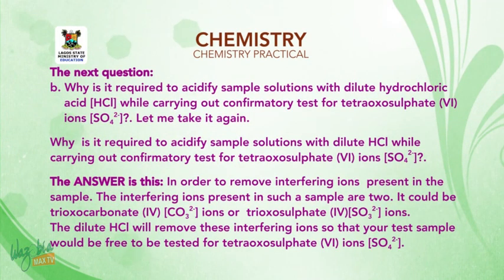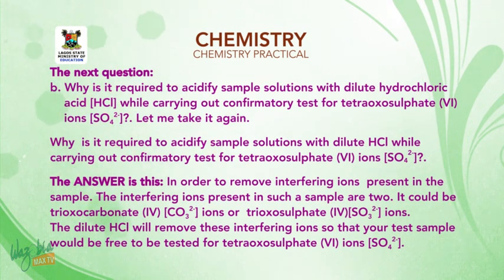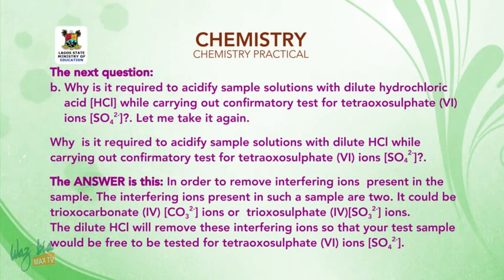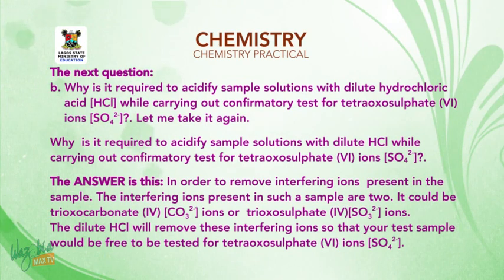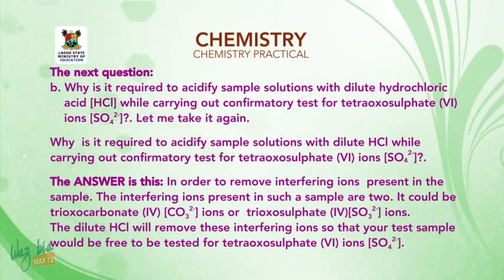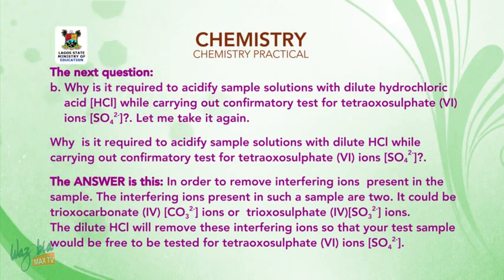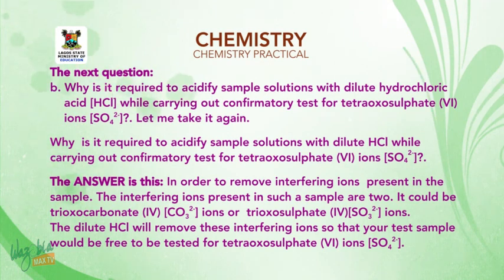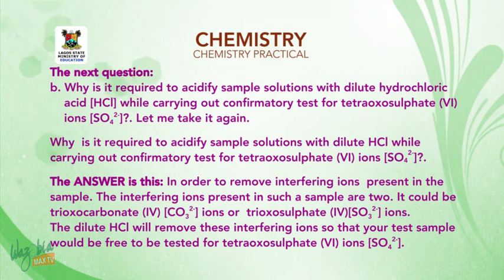The next question: why is it required to acidify sample solutions with dilute hydrochloric acid while carrying out confirmatory tests for tetraoxosulfate(VI) ions? The answer is: in order to remove interfering ions present in the sample. The interfering ions in such a sample could be trioxocarbonate(IV) ions or trioxosulfate(IV) ions. The dilute HCl will remove these interfering ions so that your test sample will be free to be tested for tetraoxosulfate(VI) ions.